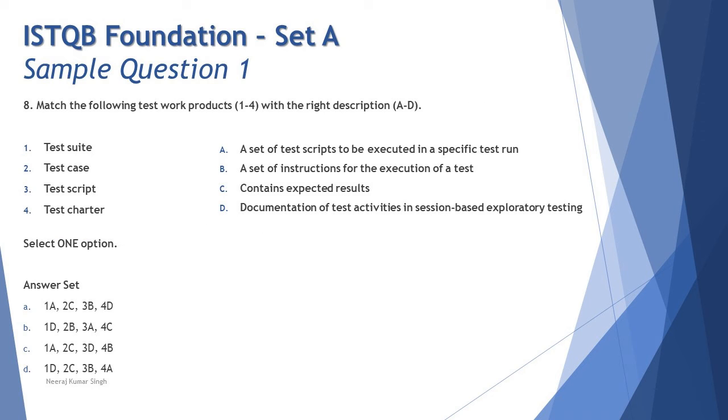Taking another question from this particular chapter, which is eight: Match the following test work products one to four with the right description A to D. Now that's something always difficult for most of us when it comes to match the following. They're just trying to tell you that if you don't know one, then you are done. So it's really important for you to at least remember few of them because if you don't know any one of them, you are completely clueless. Here you need to start to answer this match the following from the most confident option which you remember. The very first thing here is to quickly recall, do you remember what exactly the process was all about? For this you need to know every single phase and all the unique activities or special activities from each of the phases.